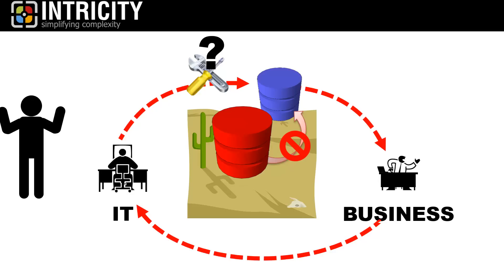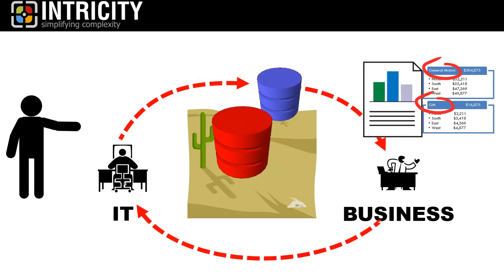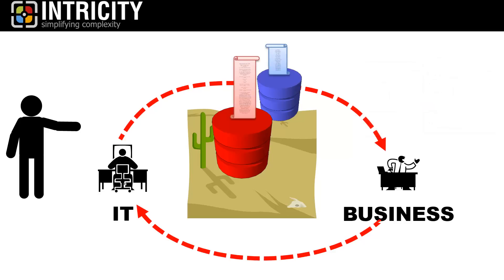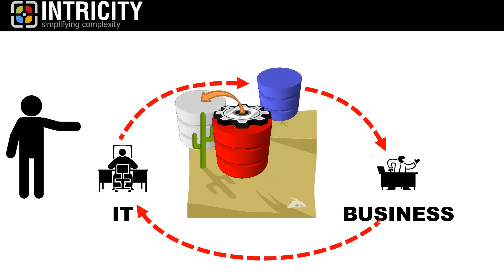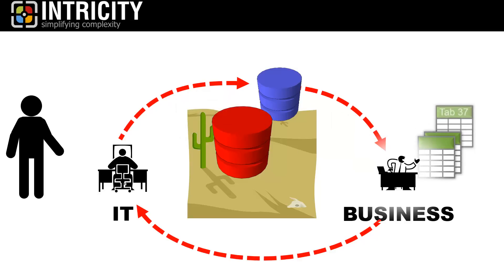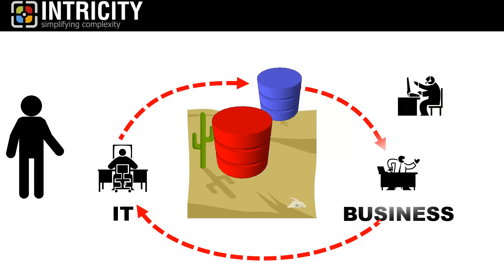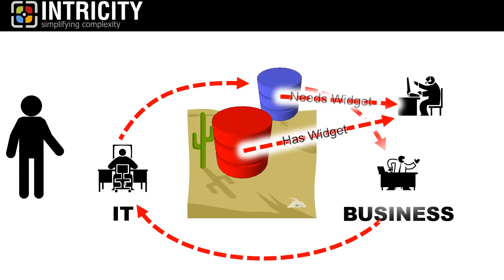IT doesn't have enough context to fix the data and the business users believe that it's an IT issue. The impasse causes lots of problems, which will reveal themselves in a variety of ways. For example, reports don't roll up right because the data isn't correct. Different systems have their own customer records. Standing up a new system requires lots of rework. And business rules end up being something somebody puts in a departmental spreadsheet to get figures to add up. Cross-selling is nearly impossible because there isn't a consolidated profile of the customers' interactions with the company.